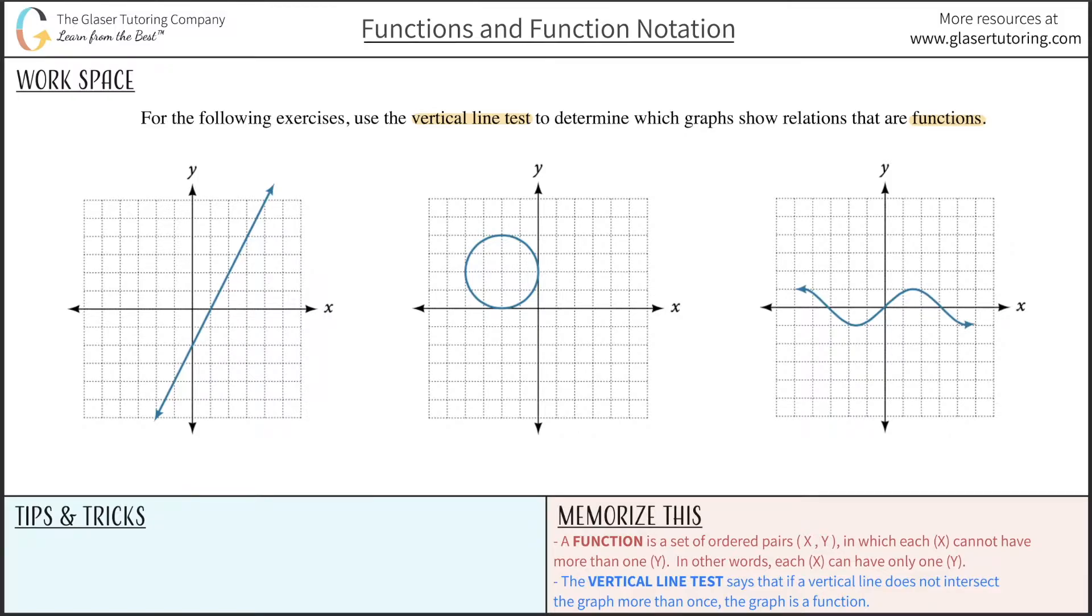If I draw a vertical line along the first graph, let's say I draw it at x equals negative one, I notice there's only one point of intersection. That means when x is negative one, my y value will be negative four. And it will only be negative four when x is negative one.